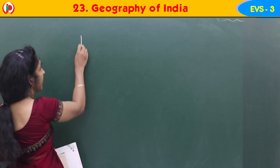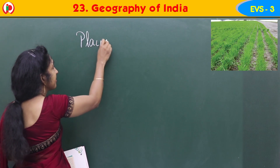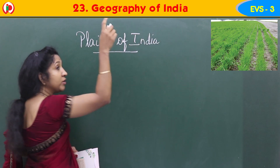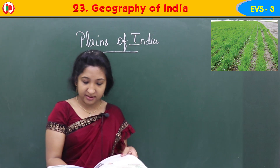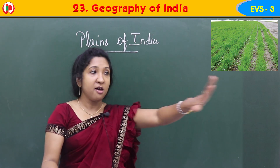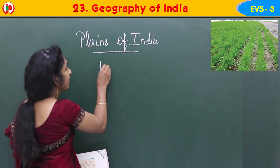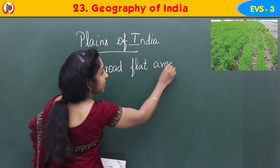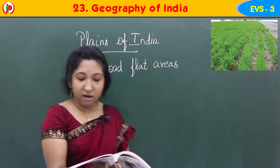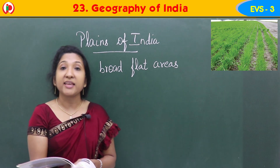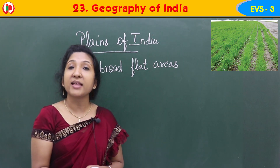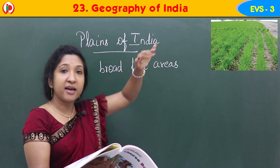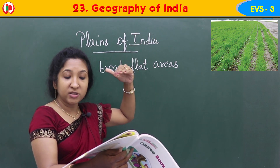Now we will learn about plains of India. Plains are broad flat areas of land. To the south of the Himalayas lie the northern plains of India. In the India map, just below the brown northern mountains you can see the green-colored northern plains. The rivers like Ganga and Yamuna flow through these plains.